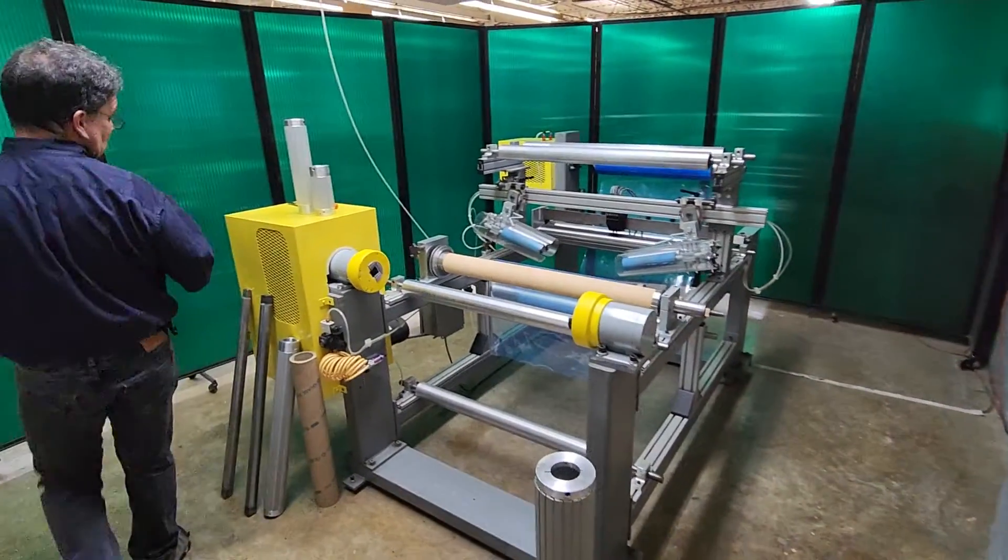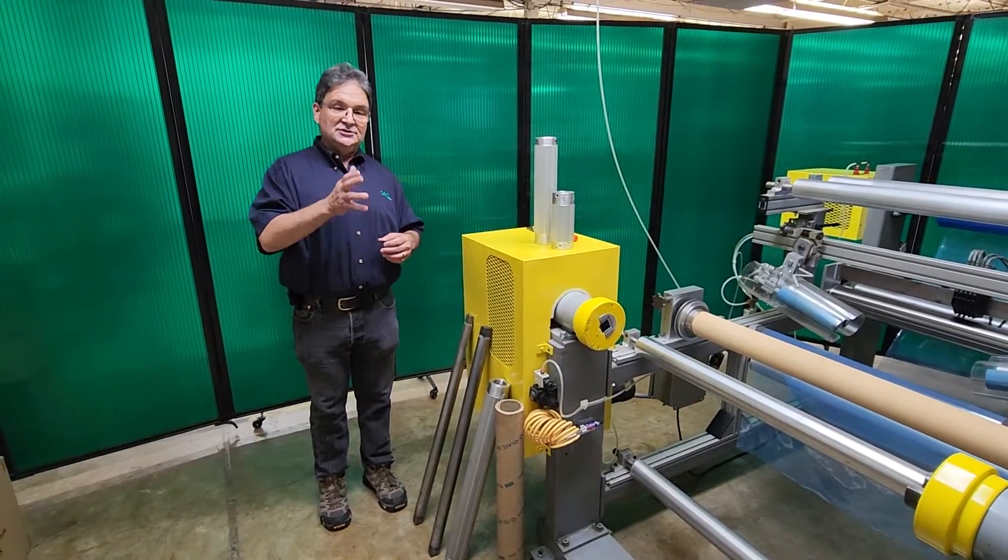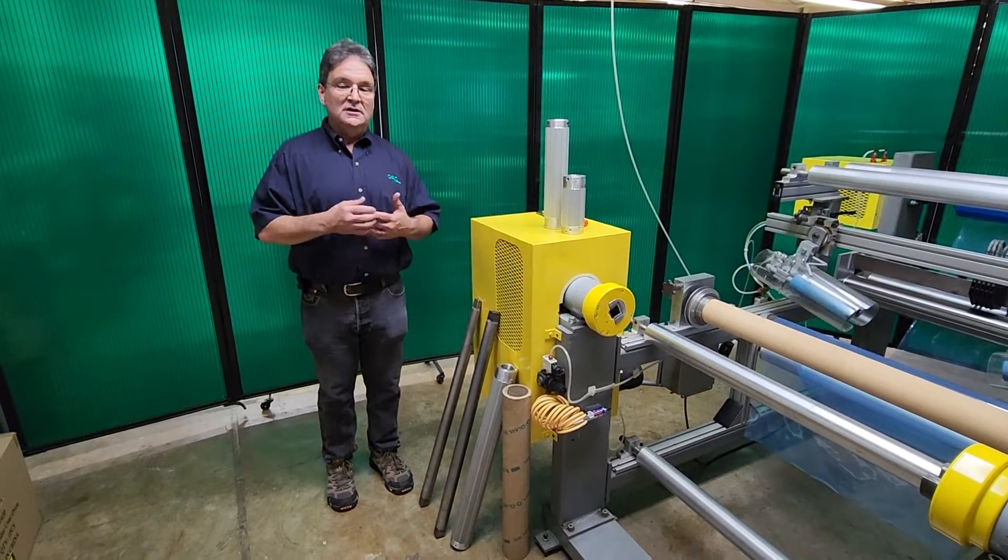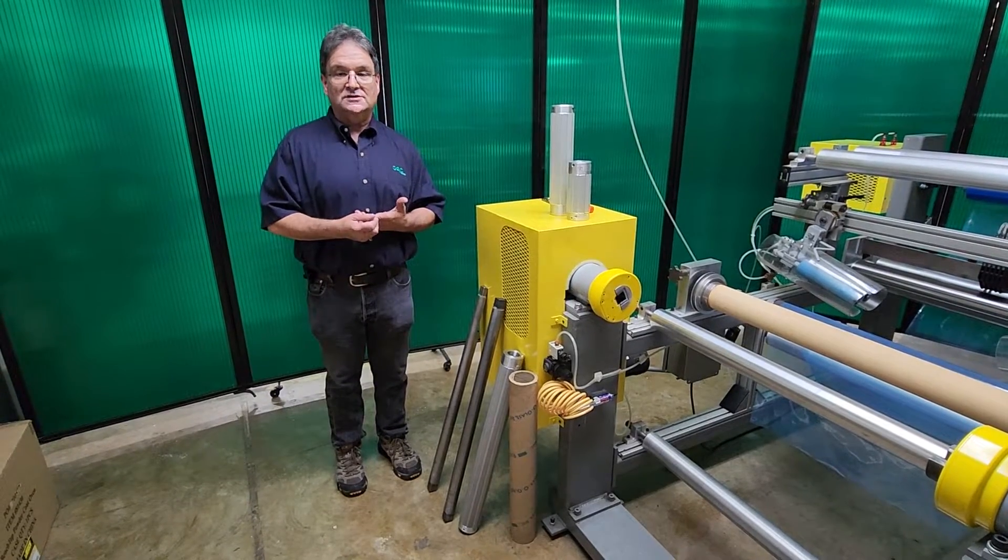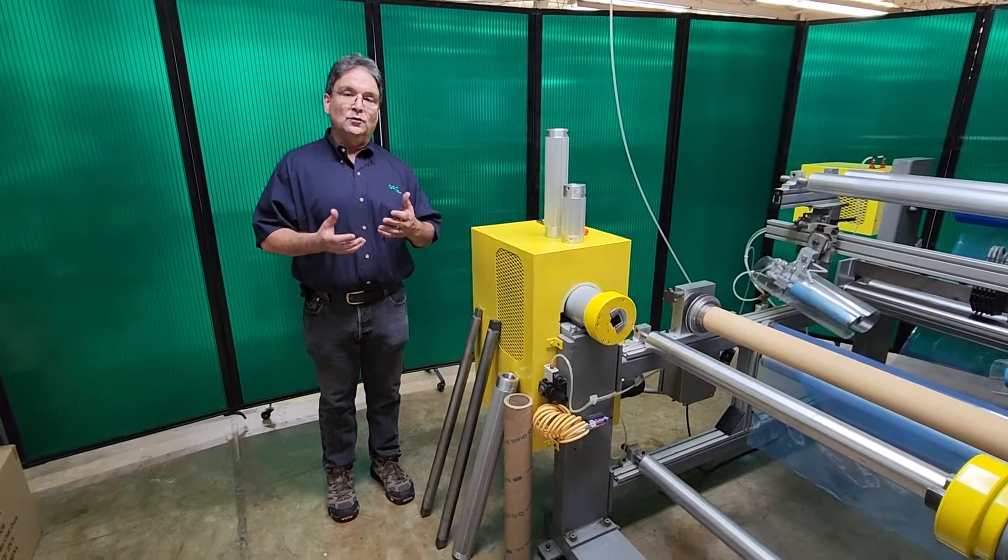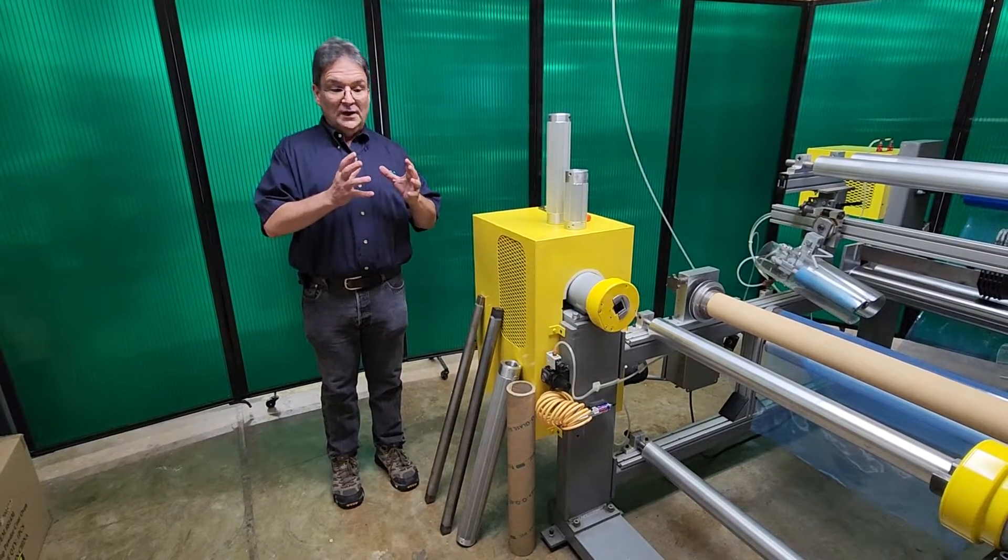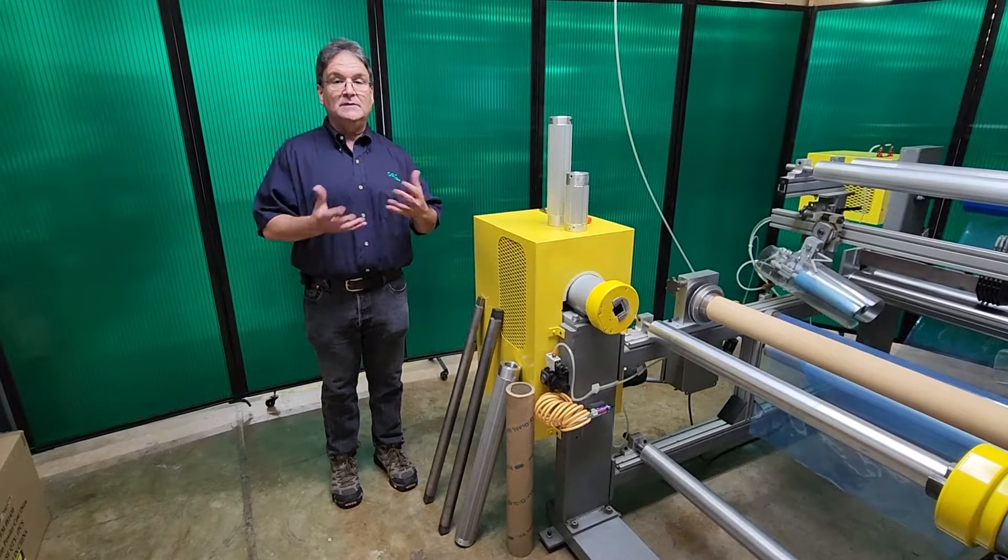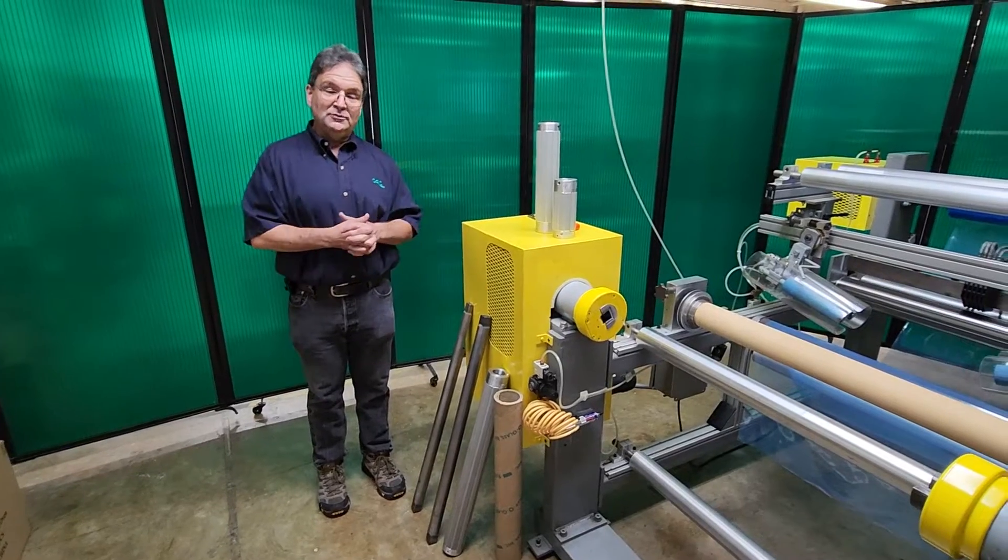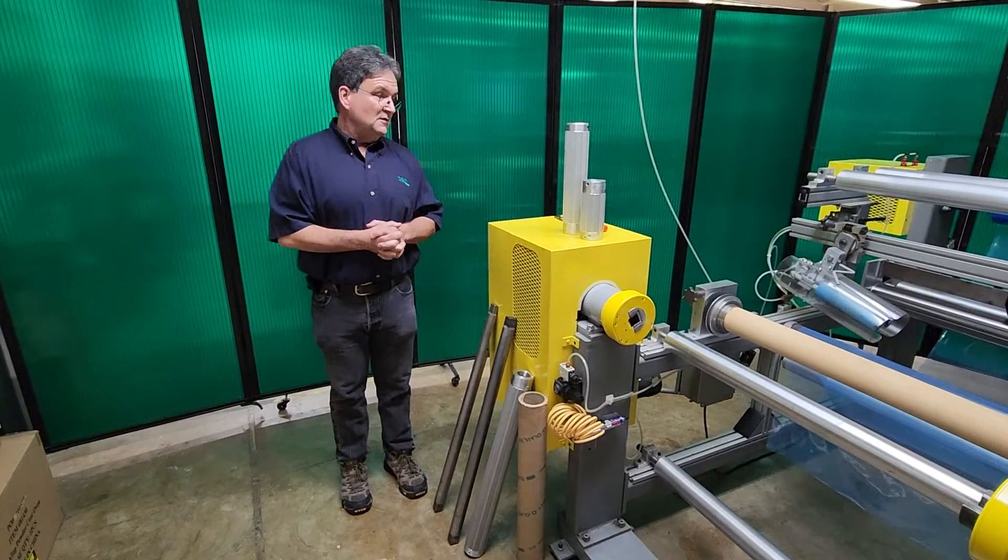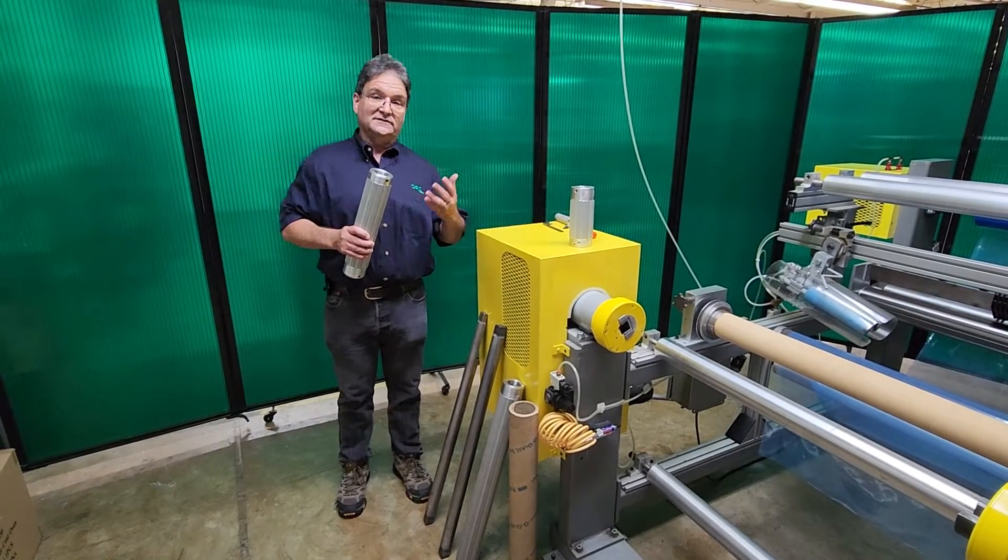The internal construction of the air shafts is always the same regardless of diameter. I mentioned six inch and three inch but we also manufacture special diameters. We've done six and three quarters for a specific core size. We can do metric sizes, four inch, five inch. We can make almost any diameter as long as we get a core sample from you. But the internal construction is always the same regardless of diameter or length.